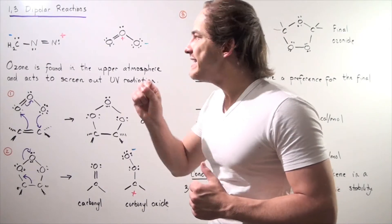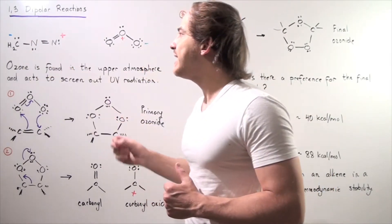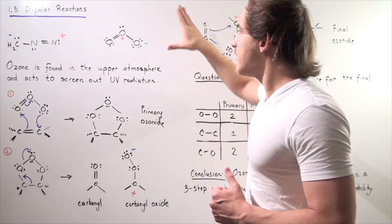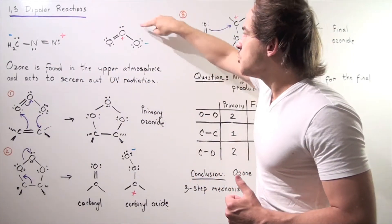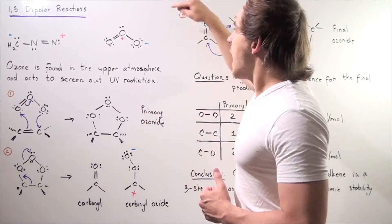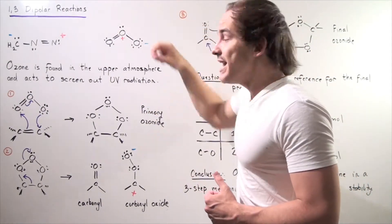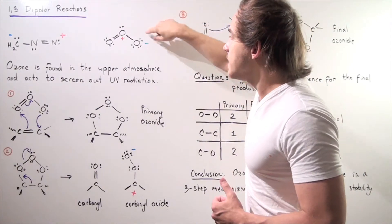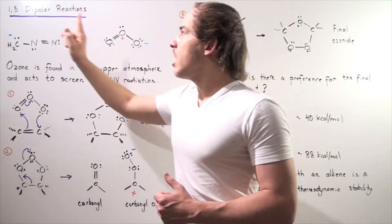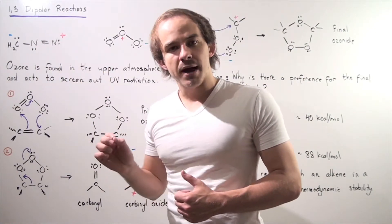In this example, we have a negative charge on the carbon and a positive charge on the nitrogen. Likewise, on this example, this is known as an ozone molecule. We have a positive charge on this middle oxygen and a negative charge on this end oxygen. Both of these are examples of 1,3-dipole compounds.